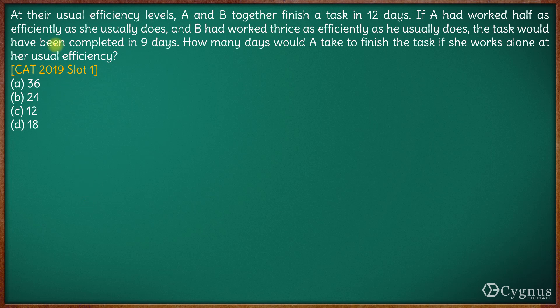Hi, here in this question we have at their usual efficiency levels, A and B together can finish the work in 12 days. So if A and B work together, they can finish the work in 12 days. This is what is given.